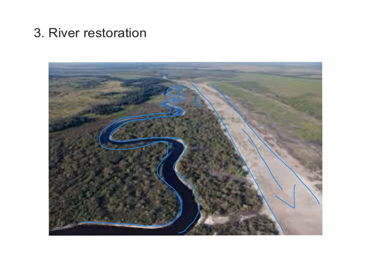Meanders also encourage flooding, so this river is liable to flood in the rural area — and that's okay, because flooding here means that flooding further downstream in an urban area is prevented.